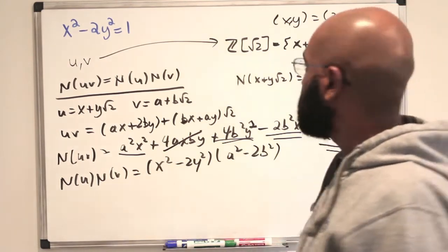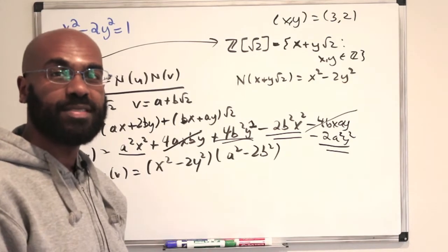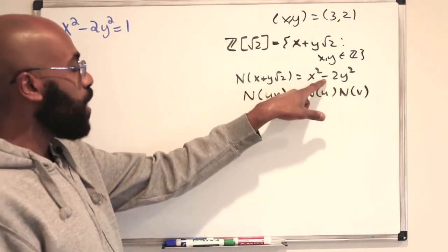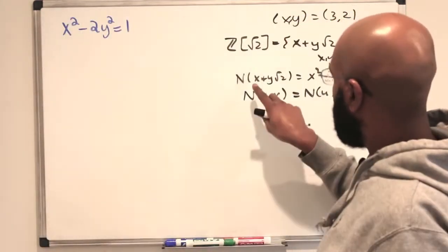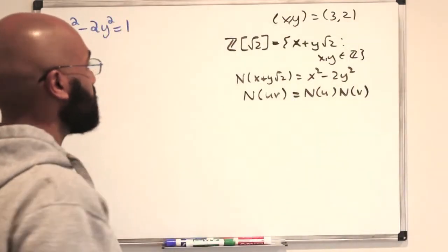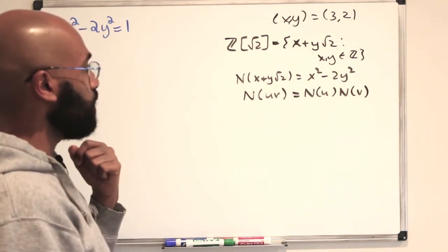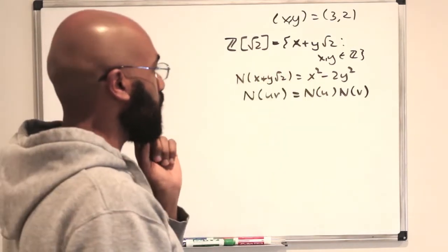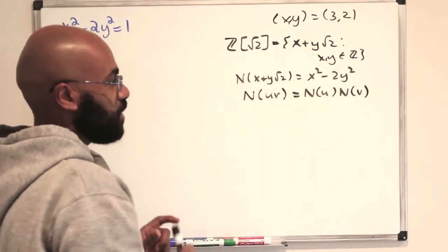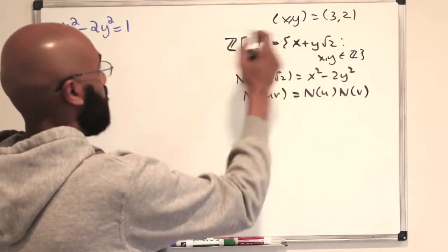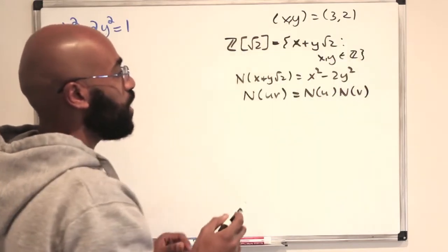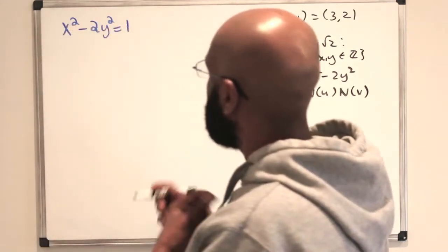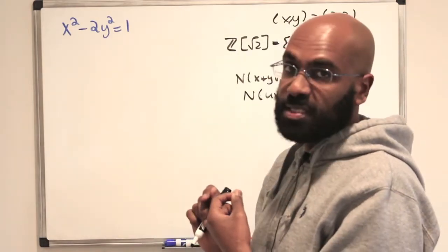Let's see how we can use that, together with our original solution, to generate a bunch of new solutions. If you have a number in this number system whose norm is 1, then the coefficients x and y satisfy the original equation. So we're looking for numbers in our number system whose norm is 1. The norm is multiplicative, and we know we have one particular number in this system — the number 3 plus 2 root 2 — that has norm 1. So we're going to use this multiplicative property to generate other numbers that also have norm 1, and then get solutions to this equation.